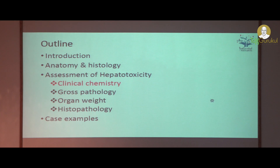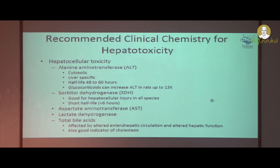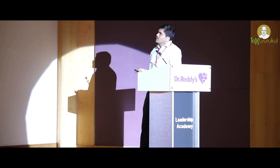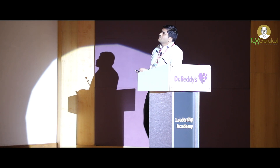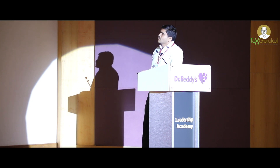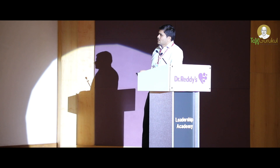Coming to the clinical chemistry, this covers what is recommended for clinical chemistry assessment of hepatotoxicity. For hepatotoxicity we mainly use ALT, that is alanine aminotransferase, which is a cytosolic enzyme and a leakage enzyme. Whenever there is any damage to hepatocytes, leakage will increase and the amount of this enzyme in circulation will increase. Then there is sorbitol dehydrogenase, but it has a very short biological half-life. It is very specific for hepatocellular injury. We also have AST, lactate dehydrogenase, and total bile acids.